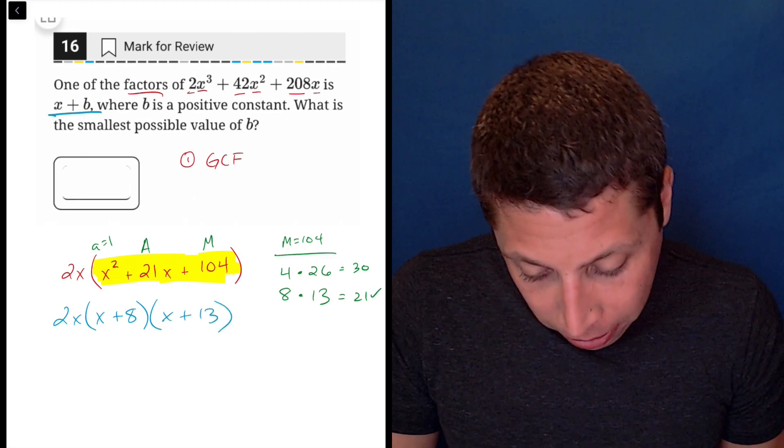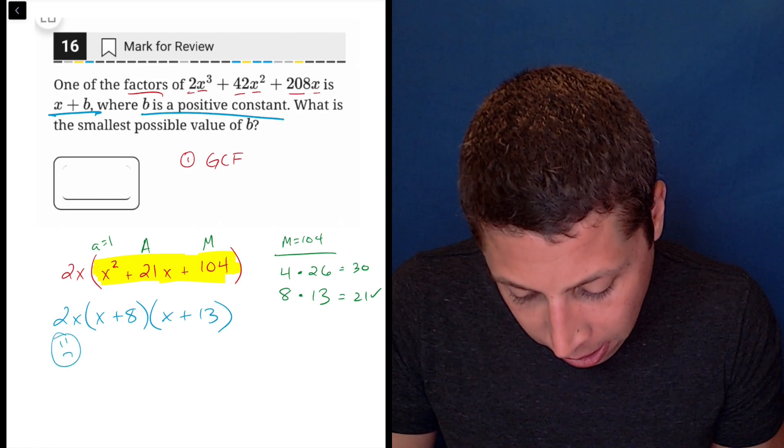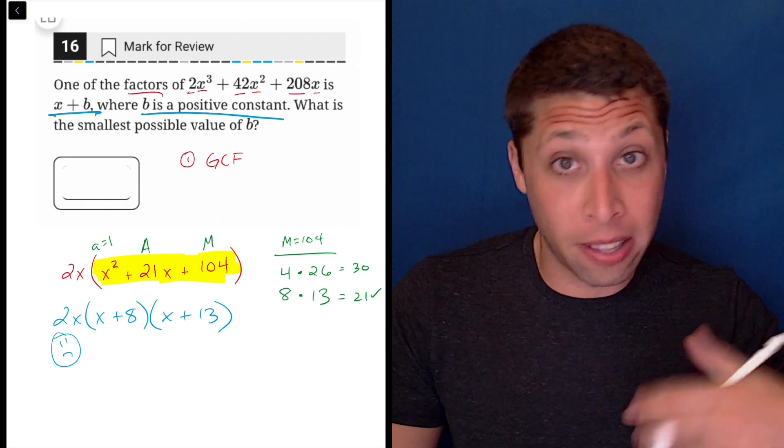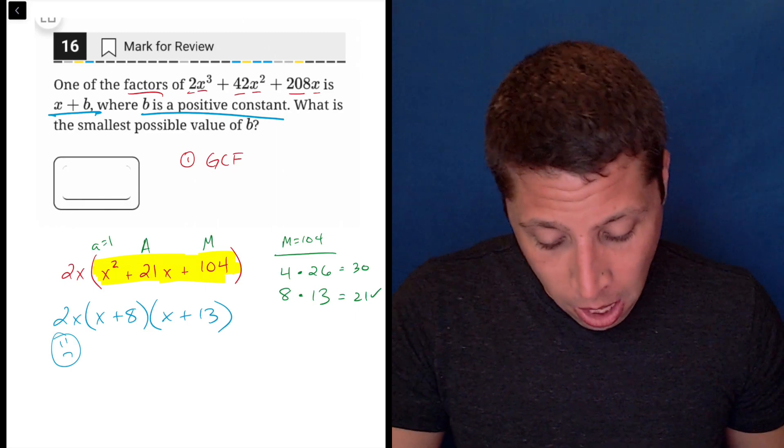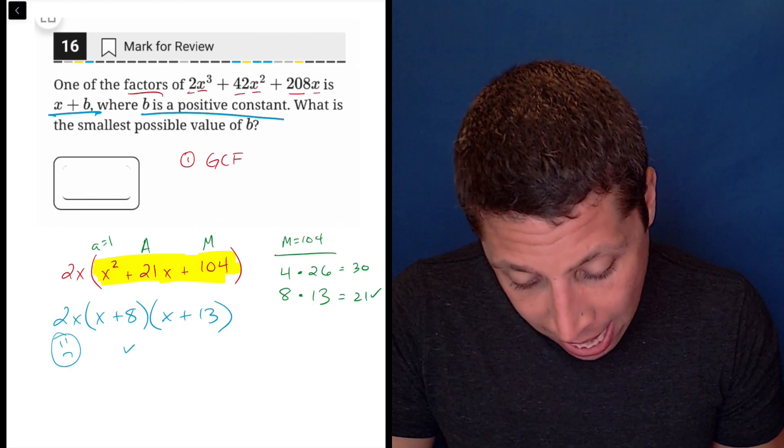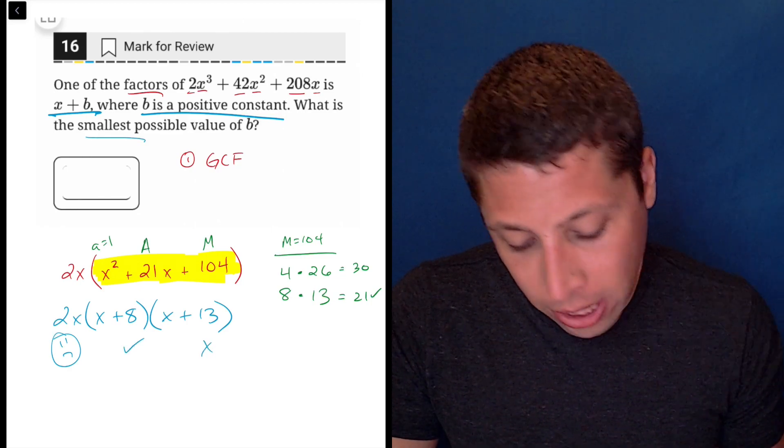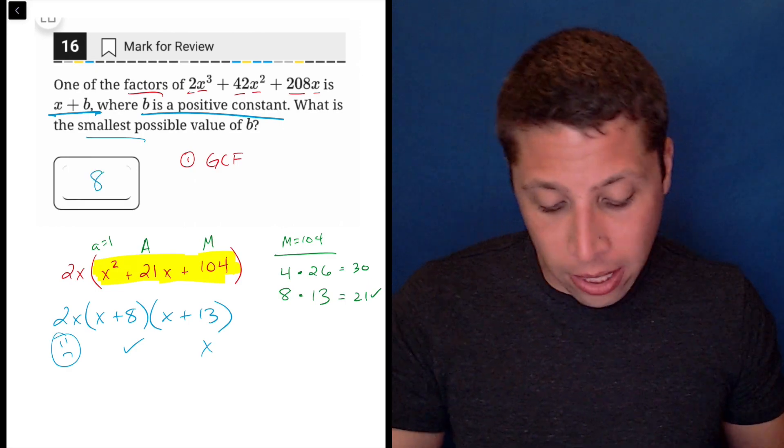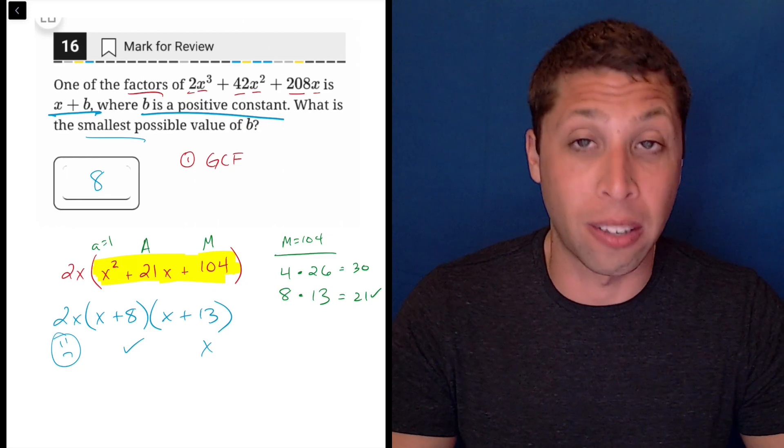What do they want? They want x plus b, where b is a positive constant. That gets rid of this piece, because in this case the factor would be 0, and that is not a positive number. But b in this case would be 8, and they want the smallest possible - that's why 8 and not 13. x plus 13 is also a factor, but they wanted the smallest one.